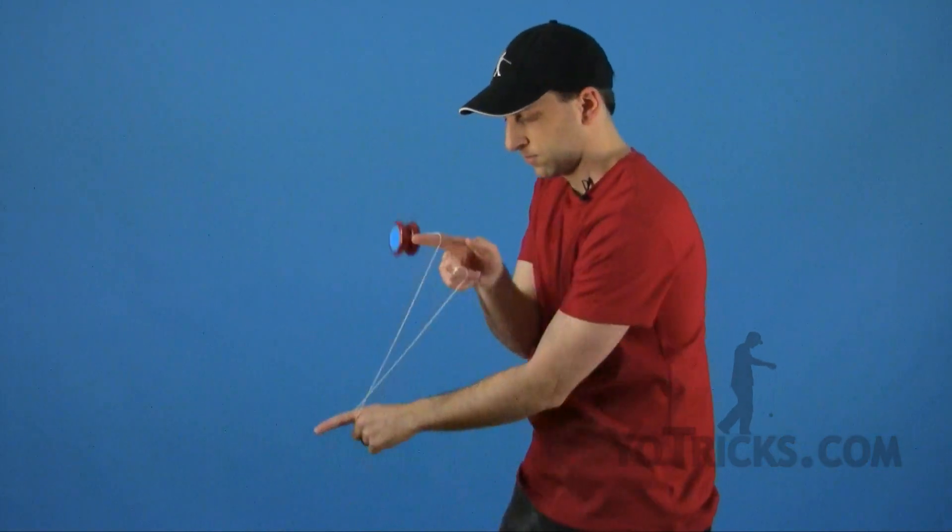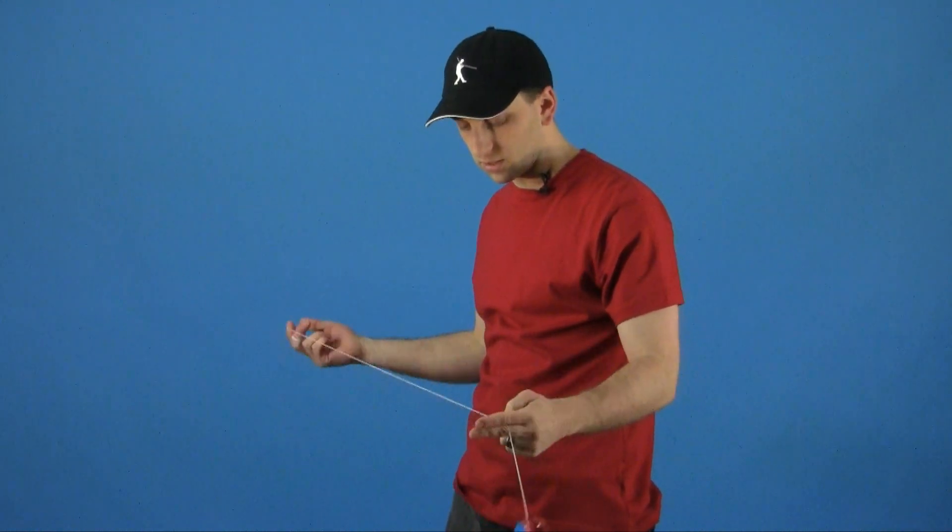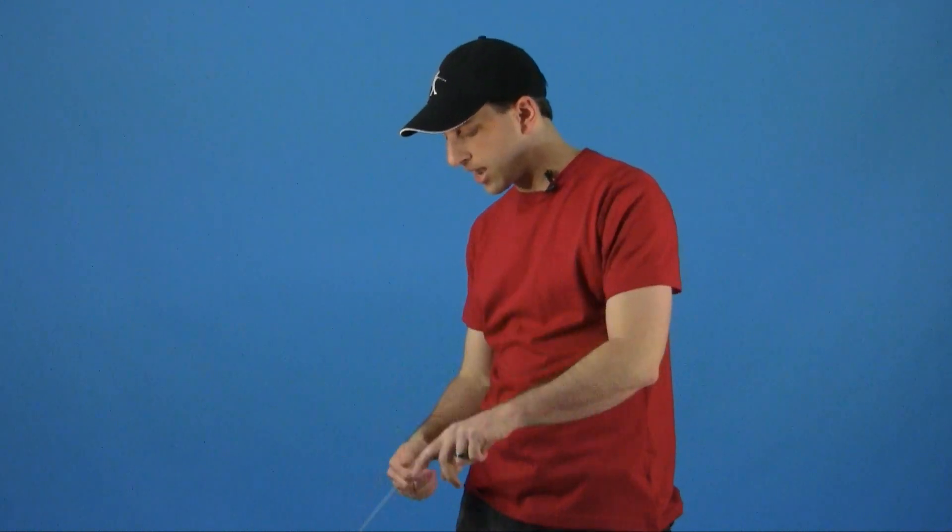This trick is called Quijie Bow and it looks like this. A Quijie Bow is just a series of hops where you hop the yoyo from a single right into a one and a half and then to a double.